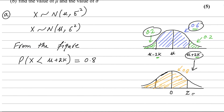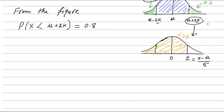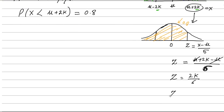Now we can write the formula for Z: Z equals X minus mu divided by sigma. Replacing X with mu plus 2k gives Z equals (mu plus 2k minus mu) divided by sigma. The mu terms cancel, and with sigma equals 6, we get Z equals 2k divided by 6, which simplifies to Z equals k over 3. This converts the normal distribution to the standardized normal: P(Z < k/3) = 0.8.